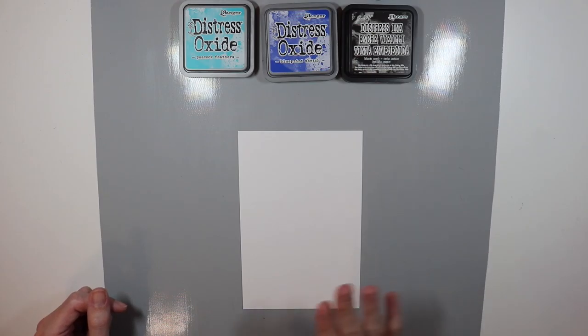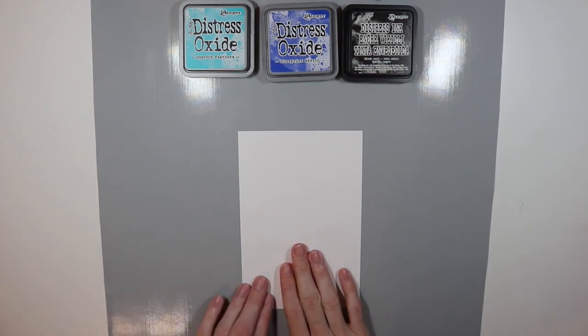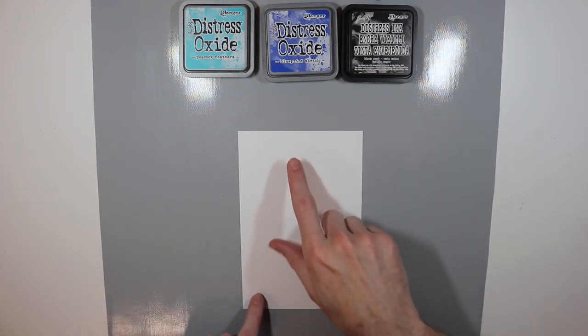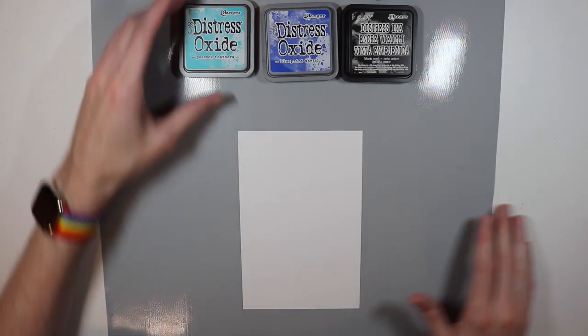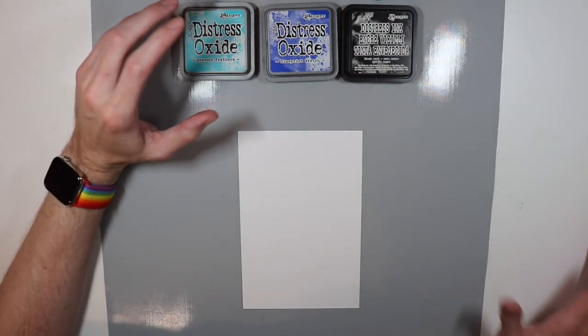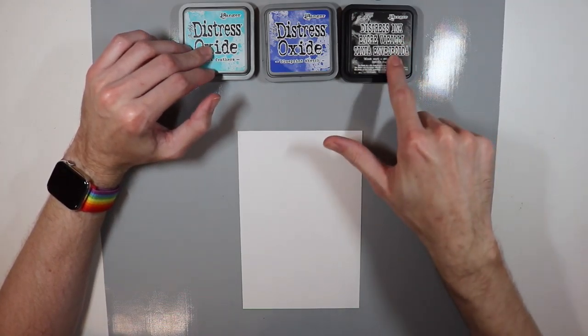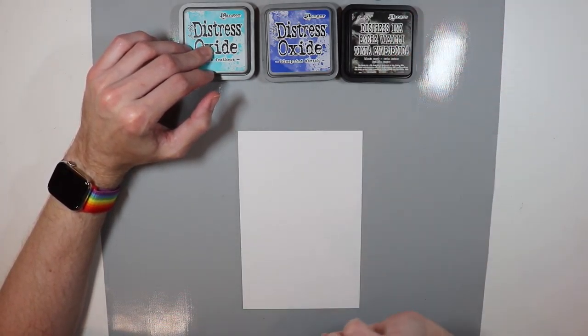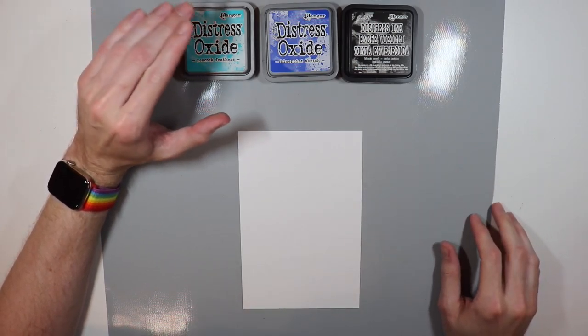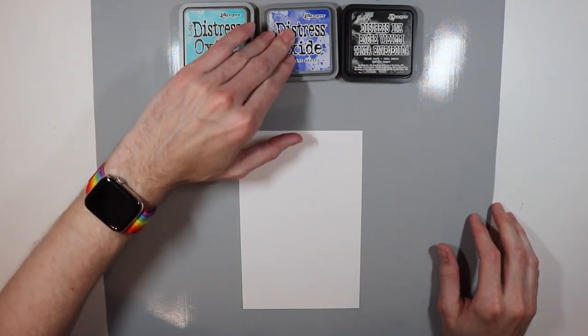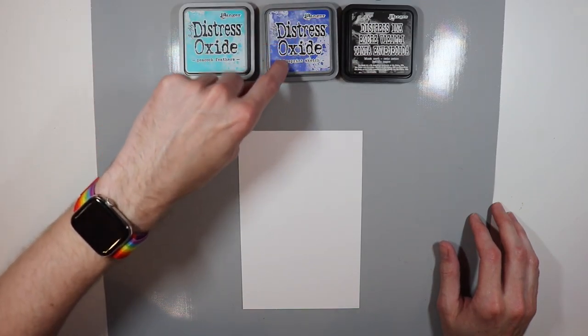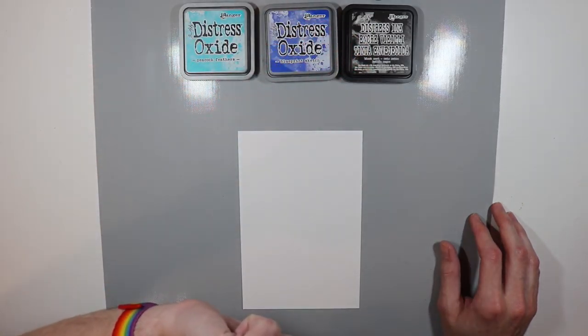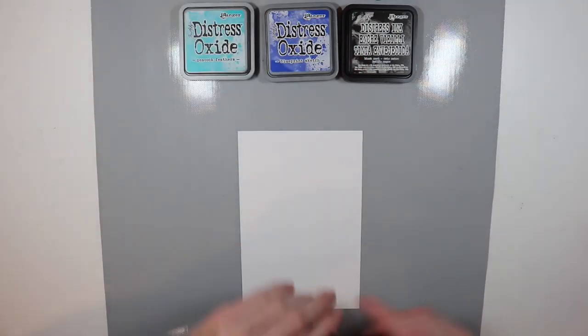To get started today, I'm using a piece of Bristol paper cut to five inches by seven inches, and I'm going to use three distress oxides—well, two distress oxides and one distress ink because I don't have black soot in oxide yet. I'm going to use peacock feathers and blueprint sketch in distress oxides, and then in distress inks I'm going to use some black soot.